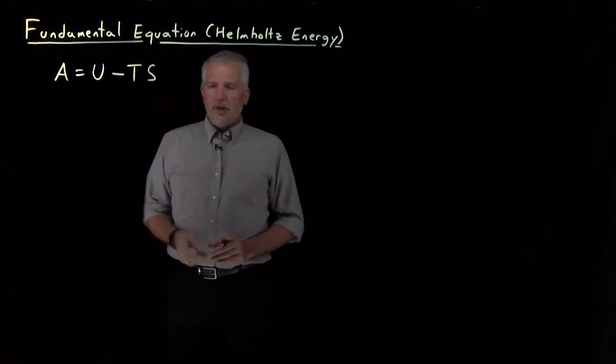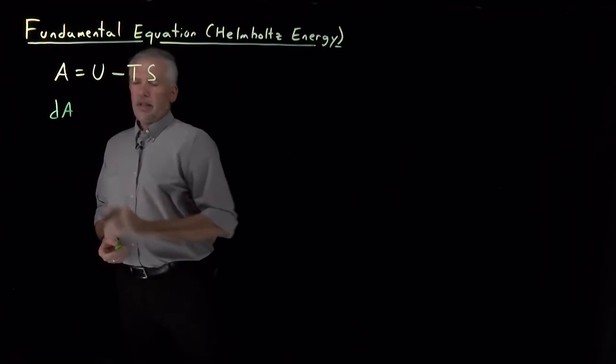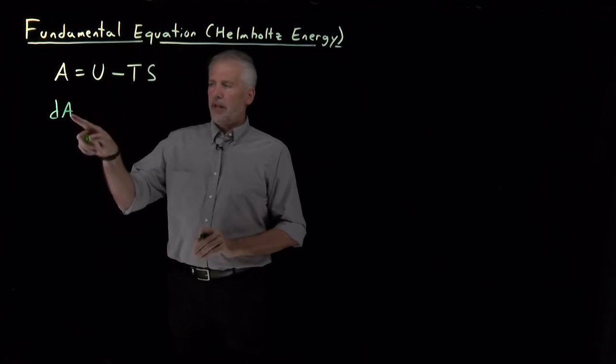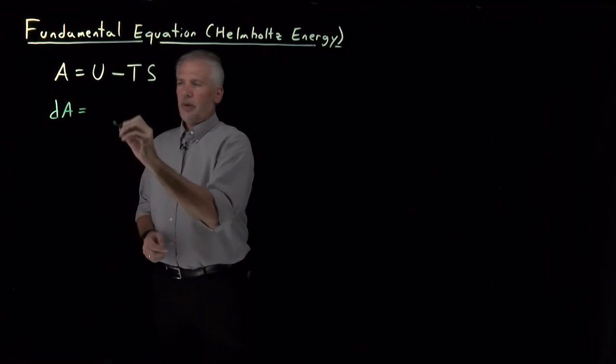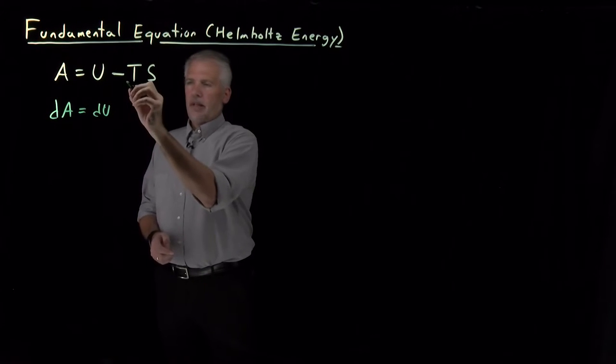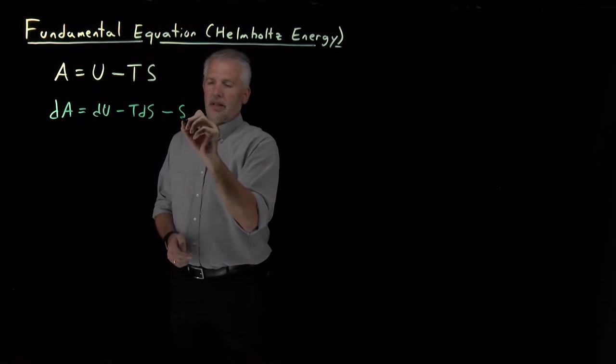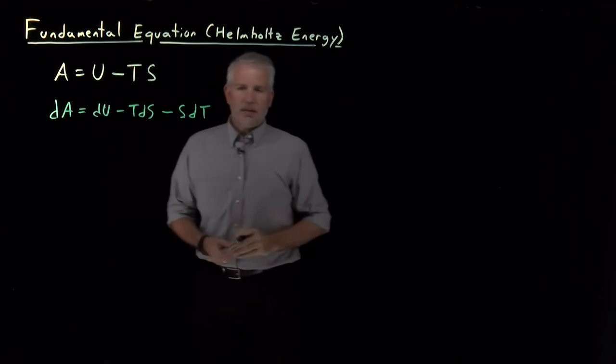Starting with the definition for A, the Helmholtz energy, we can take the differential. Differential of A is dA. On the right side of the equation U becomes dU and then the differential of T times S is T times dS and S times dT.